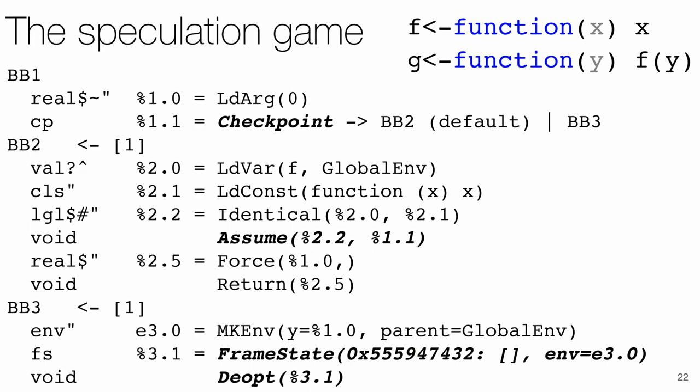On the slide, we have two functions, F, which is just an identity function, and G, which calls F with its own argument. The mechanism we use is based on the paper and defines the correctness of speculative optimizations with dynamic deoptimization by Oli Flukiger et al., and defines speculation using four instructions.